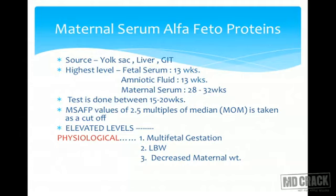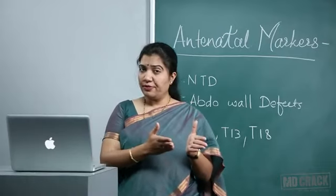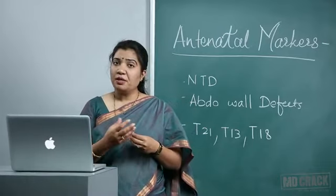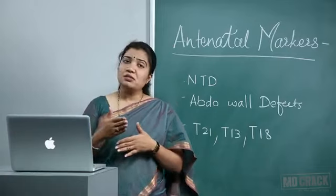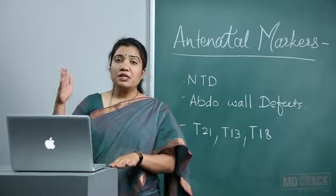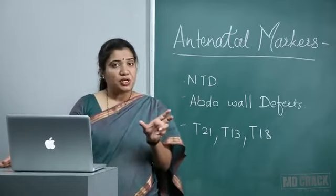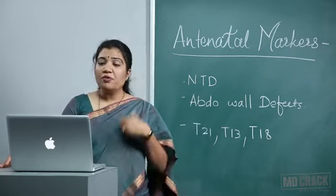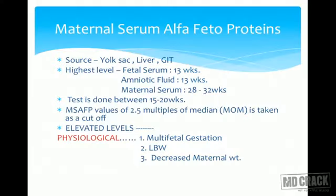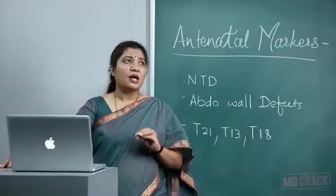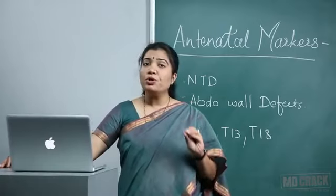AFP reaches maternal serum because the fetus secretes it, fetal urine contains AFP, and through placental circulation it enters maternal circulation. After 13 weeks the level starts rising; tests are done around 15 weeks to detect elevated or decreased levels. Physiological causes of elevated MSAFP include multiple gestation, low birth weight baby, and decreased maternal weight. There are over 20 MCQs on MSAFP levels alone, so all conditions must be memorized.